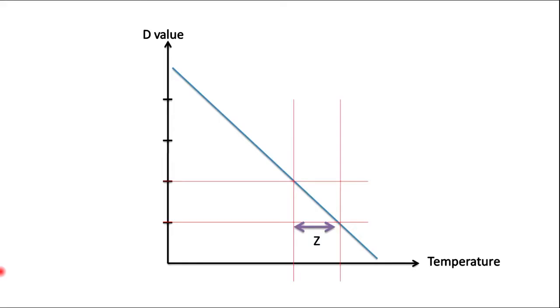If we draw a graph of D value versus temperature, you can get a straight line like this. The temperature difference that this line traverses in one log cycle is called the Z value.